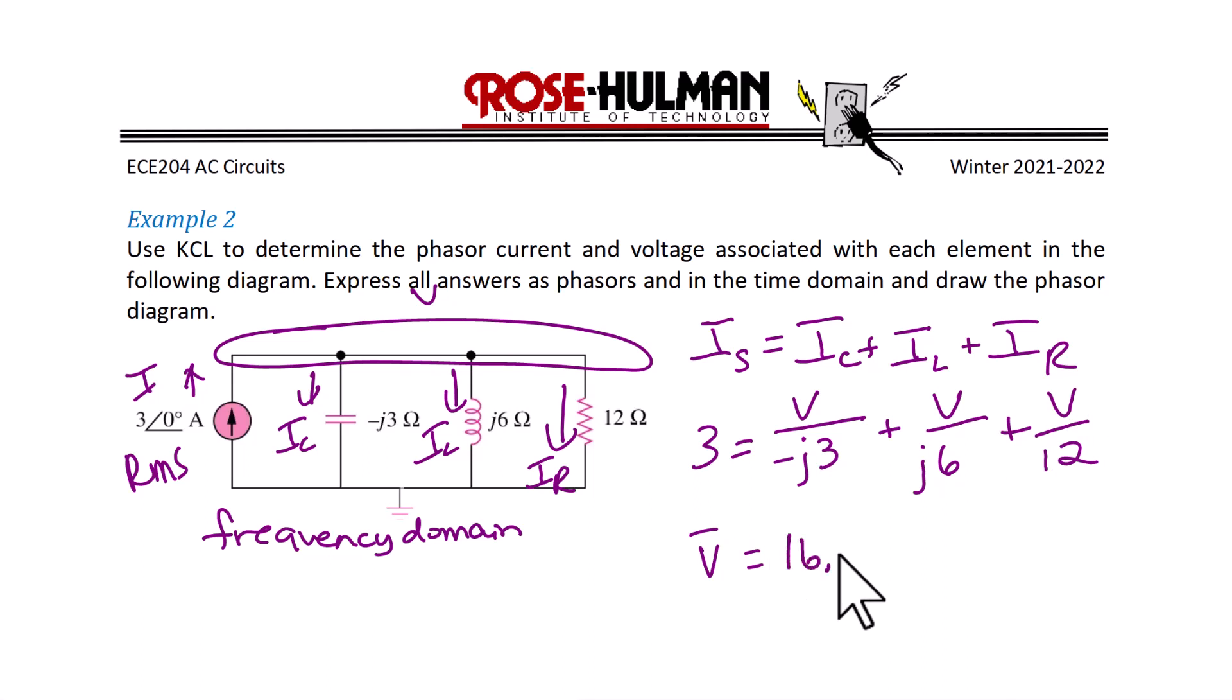we get that the voltage is equal to 16.09 with an angle of negative 63 degrees, or 7.2 minus J 14.4 volts.